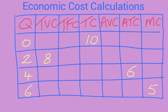Now that we know the definitions and relationships between all the costs, let's do some calculations using a table. The table has quantity (number of products produced), TVC (total variable cost), total fixed cost, total cost, average variable cost, average total cost, and marginal cost. Several quantities are already given and we'll fill in the rest.